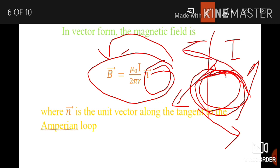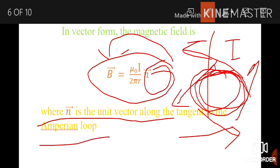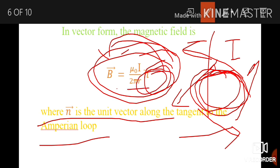The magnetic field is tangent to the Amperian loop. N-cap is a unit vector along the tangent of the Amperian loop. The magnetic field for the infinite length of the wire is B⃗ equals μ₀I divided by 2πR, times n̂. N-cap is a unit vector indicating the direction of the magnetic field, which at any point on the Amperian loop is tangent to that loop.